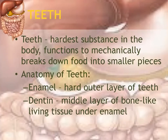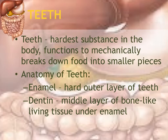Teeth are considered an accessory organ because they are not a tube that food actually passes through — they are not part of the digestive tract. The anatomy of the teeth: the outermost layer is called the enamel. It is the hardest substance in the body and it protects the softer inner portions of the teeth.